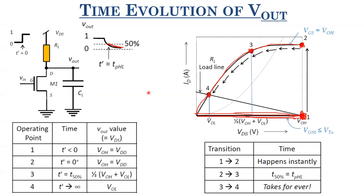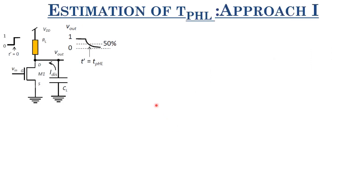There are two approaches for estimating TPHL, both giving close-to-accurate results for first-hand calculations and order-of-magnitude estimates. The first approach is based on the charge discharged from the load capacitor. The charge that moves out of CL in going from point 2 to point 3 (half the swing) is Q_discharged = 0.5 × CL × (VOH − VOL), simply CL times the change in voltage as the output traverses half the output swing.